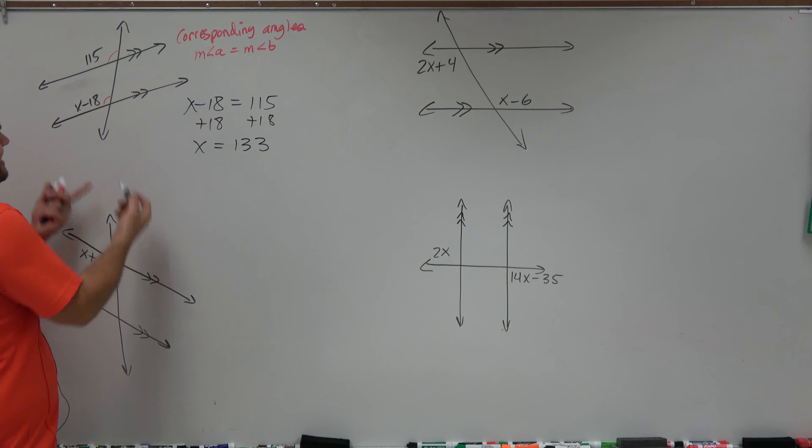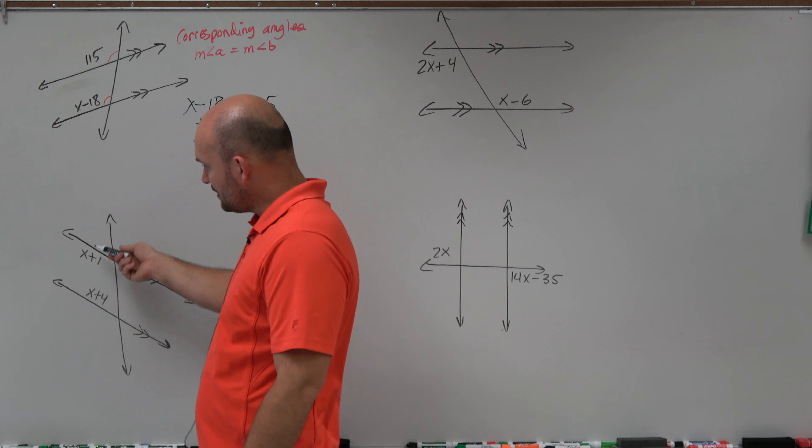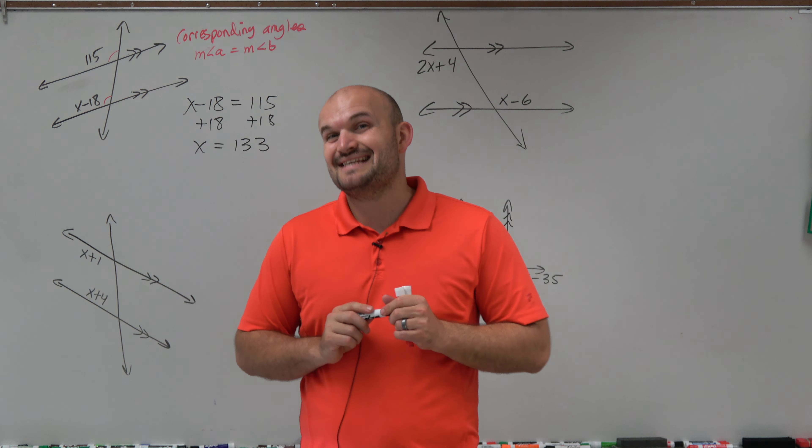Now, again, they're exactly the same. So you could re-plug in 133 in for X. And it really just depends on the problem. Are you solving for X or are you trying to find the angle measure? In this example, we're actually just solving for the value of X. But you could see that these have to be the same. 133 minus 18 is going to give you 115 anyways. But there you go. That is our first one.